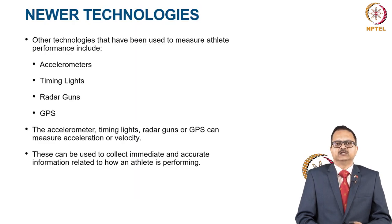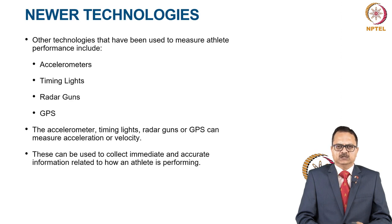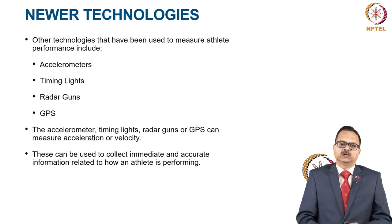There are newer technologies used to measure athlete performance: accelerometers, timing lights, radar guns, and global positioning systems (GPS). Accelerometers, timing lights, and radar guns can measure acceleration or velocity, while GPS can also measure the distance and the route covered by the athlete. These can be used to collect immediate and accurate information relating to how an athlete is performing.